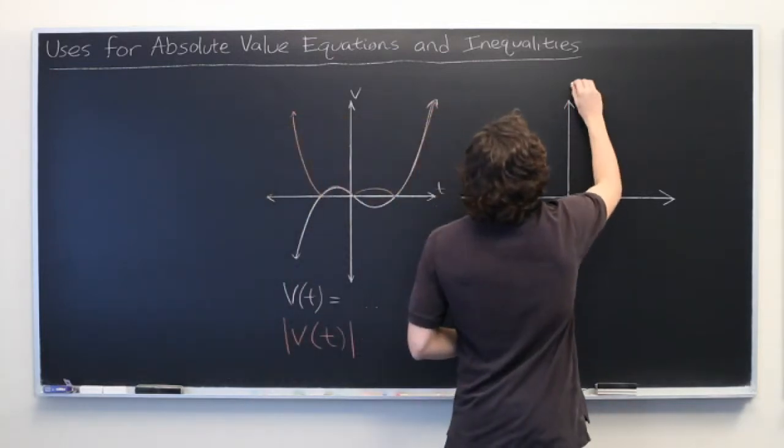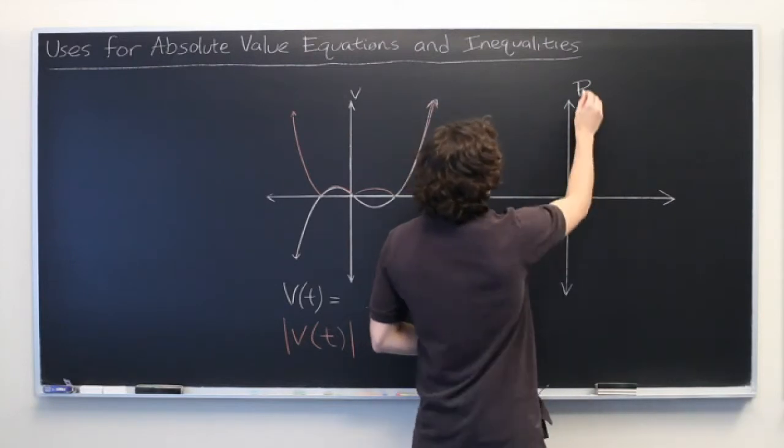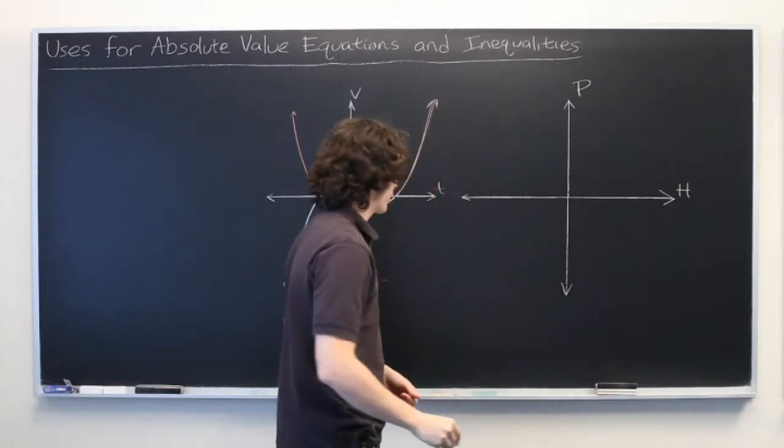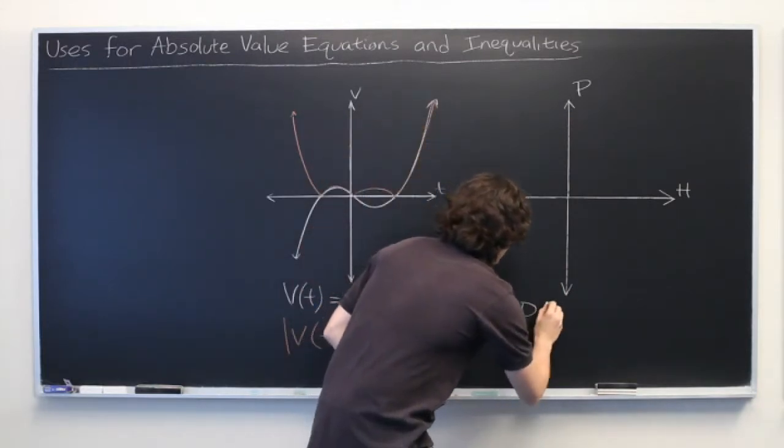So we want a function for the number of slices of pizza, p, per human, h. Why not? p of h.